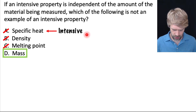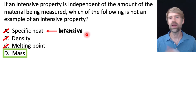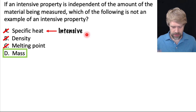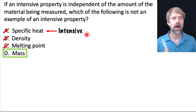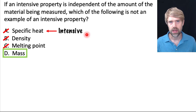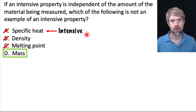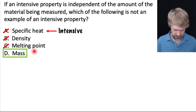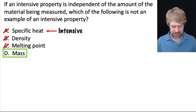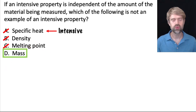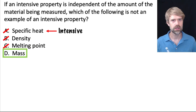Before we finish, let's go back to choice A — specific heat. You probably had no idea what it is, and that's okay. The TEAS will often put down answer choices you've never seen. I always say: focus on what you know. We knew that mass was an extensive property right away, so we could safely choose that and cross off the stuff we don't know. Stick to what you know.